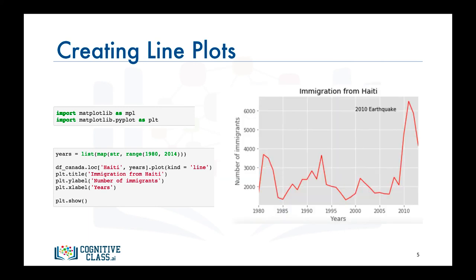Note that this is the code to generate the line plot using the magic function percent matplotlib with the inline backend. And there you have it, a line plot that depicts immigration from Haiti to Canada from 1980 to 2013.